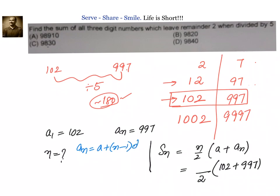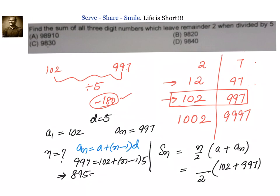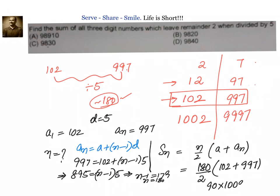To find n, we apply the formula aₙ = a + (n − 1)d. So 997 = 102 + (n − 1) × 5, since the common difference is 5. Simplifying: 895 = (n − 1) × 5, giving n − 1 = 179, so n = 180. Substituting back: Sₙ = 180/2 × (102 + 997) = 90 × 1099 = 98,910, which is option A.